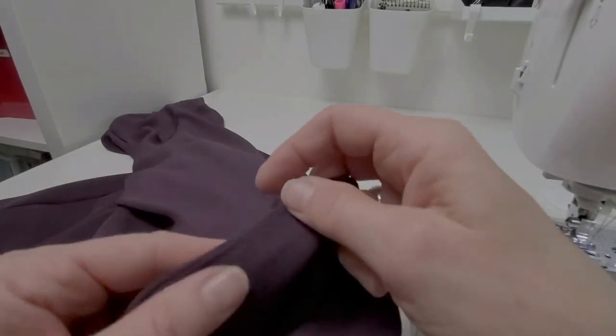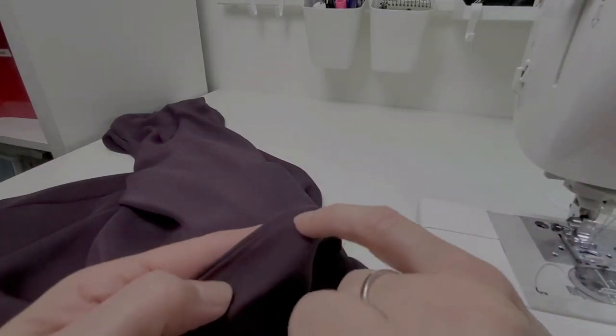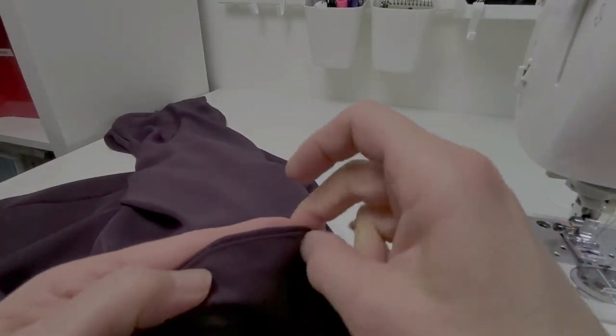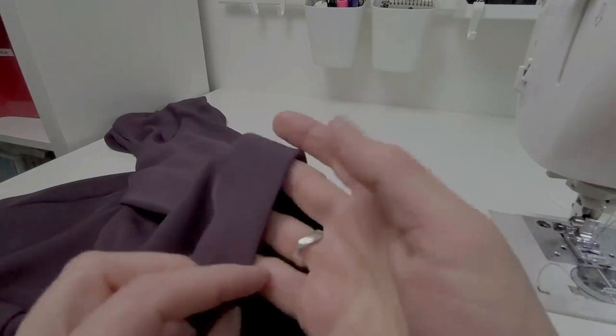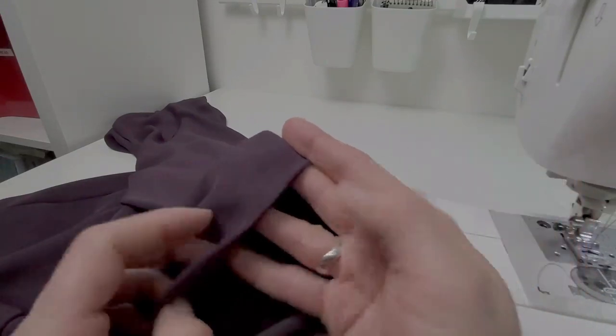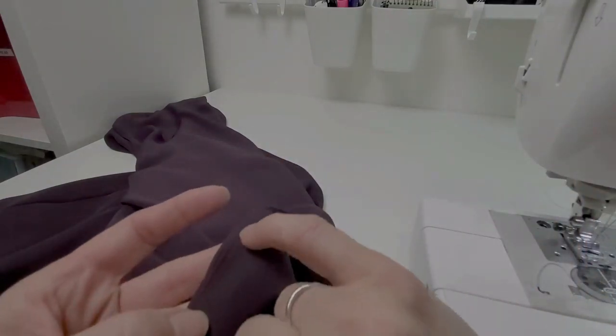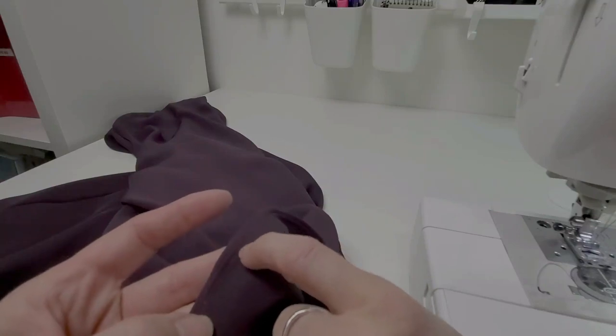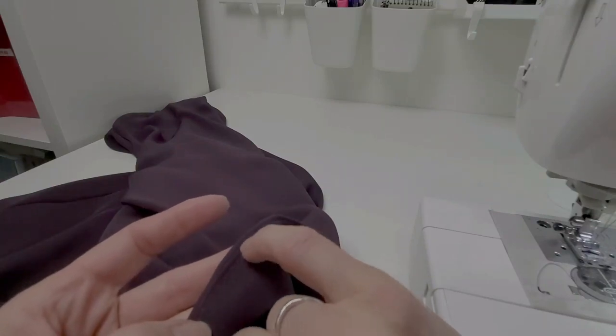Understitching is commonly used to stitch down a facing or an inside edge that you don't want to roll out and be seen from the outside. In this example, the facing has been sewn to the seam allowance so that it gives you a very nice edge and you don't see that seam on the outside.